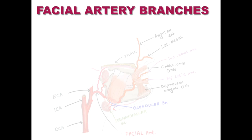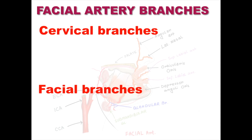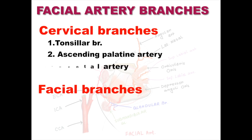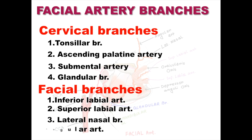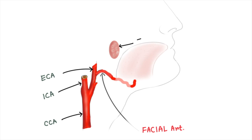The facial artery gives a total of eight branches, divided into two parts: the cervical part and the facial part. The cervical part contains four branches: the tonsillar branch, ascending palatine artery, submental artery, and glandular branch. The facial part also contains four branches: inferior labial artery, superior labial artery, lateral nasal branch to the nasalis muscle, and the angular artery, which is the terminal branch.